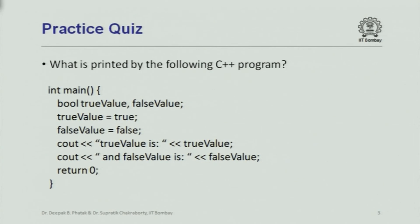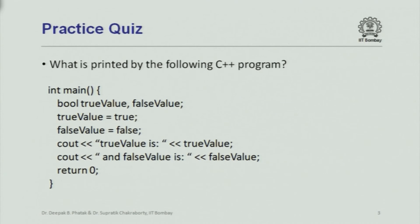Now let us look at the next question, which is also fairly simple. Here is a simple program with two Boolean variables set to the Boolean constants true and false. It then outputs their values. The question is: what do you think this will print out? We are really asking how true and false are going to be printed when the Boolean variables are output.